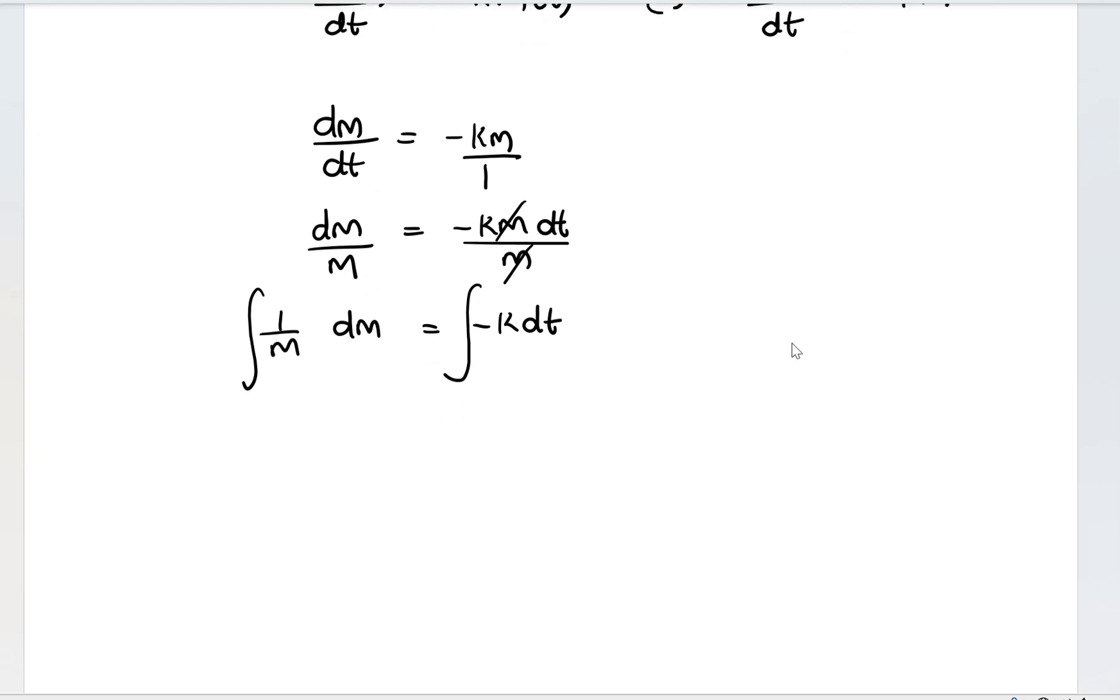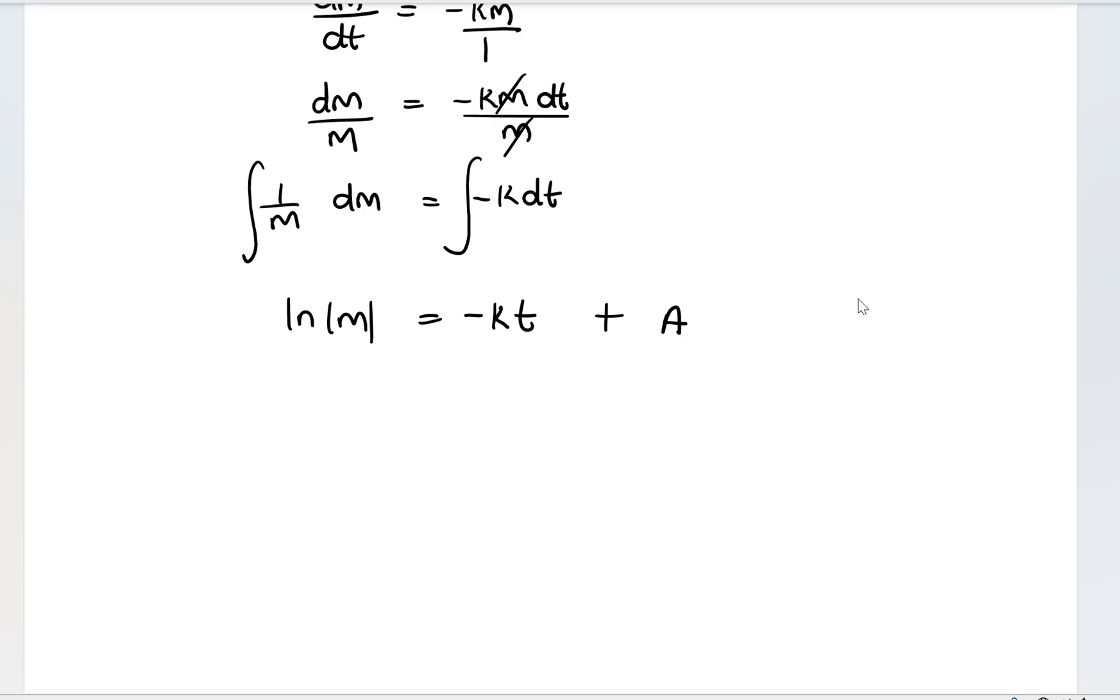If I do that, the integral of 1 over a variable is going to be ln of m, where m must be strictly a positive number because you can't evaluate the ln of a negative one. On the right side, negative k is a constant, so I'll pull it out. If I integrate dt, I get t, then plus some constant, which I can call a. We're going to exponentiate both sides so that we get rid of the ln. We want to harvest this m.